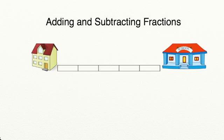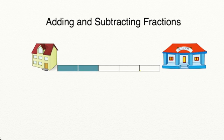We are going to begin today's lesson on adding and subtracting fractions by using the picture below. As you can see, we have Sam's house over on the left and we have a school building over on the right. Sam is walking to school and he gets two fifths of the way before he has to stop and tie his shoe. Then he gets another one fifth of the way before he has to stop again. How far has Sam gotten on his way to school?